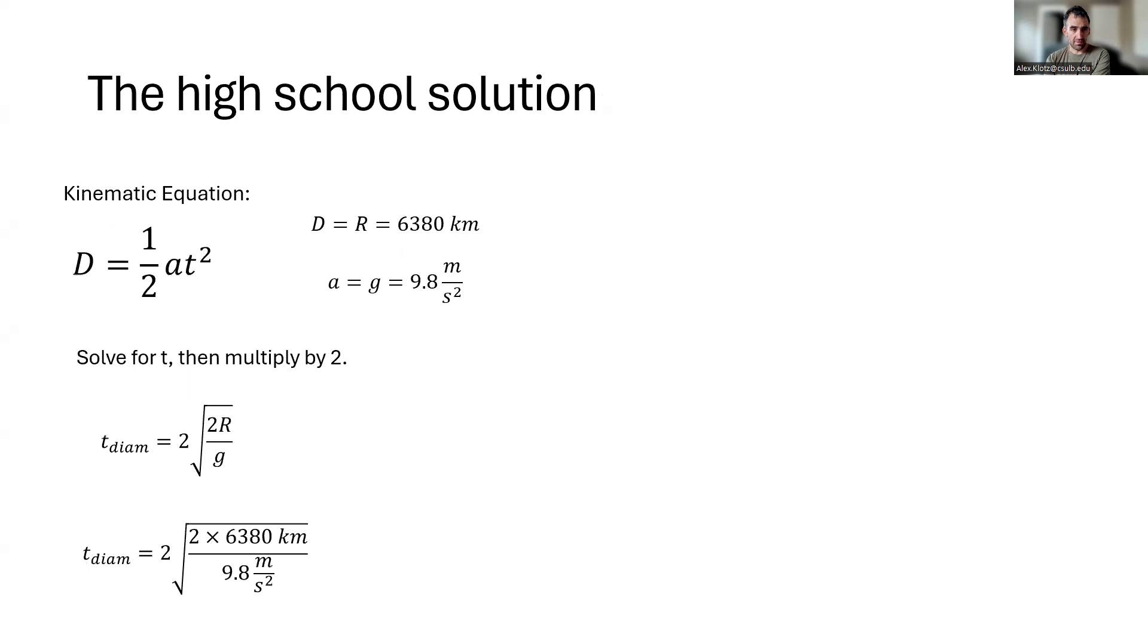So we solve for t, we get this expression that we can put numbers into, and if we do that we get 38 minutes. So about 60 times faster than commercial airliners can currently do. Pretty impressive, but we also know that the gravitational field strength or acceleration is not constant inside the earth, so we might need some more advanced physics to understand this problem.